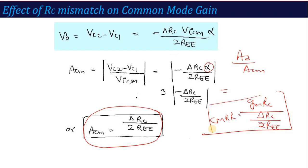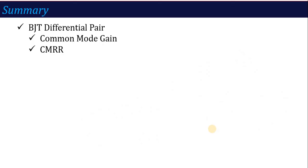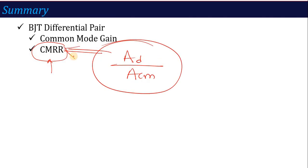This is the same concept we have done in the MOS Differential Pair. So if you have studied the MOS Differential Pair, you will follow this BJT analysis symmetrically. With this, the topic of Common Mode Gain and CMRR of BJT Differential Amplifier is complete. Overall, we have covered differential mode gain, common mode gain, and CMRR — for both single-ended and double-ended operation — to calculate the Common Mode Rejection Ratio.